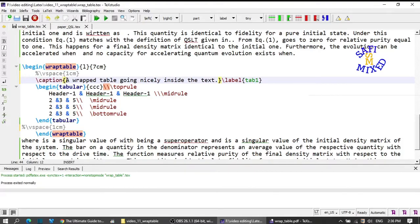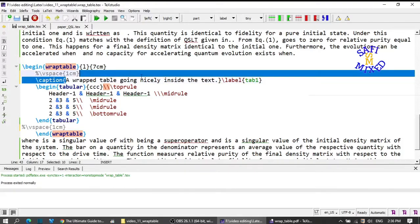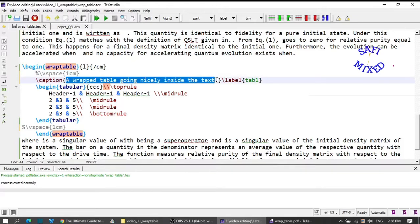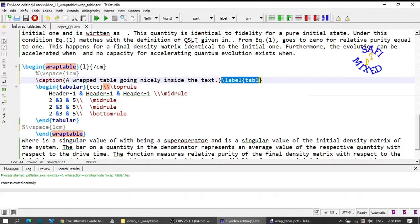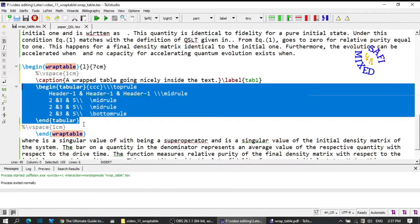Then I add caption command and inside the argument write the description of the table. Next to the caption command, I use the label command and add a key for referencing to the table inside the text, so I give tab one.